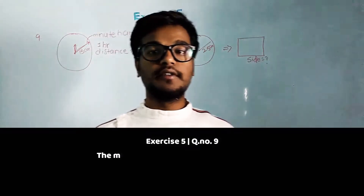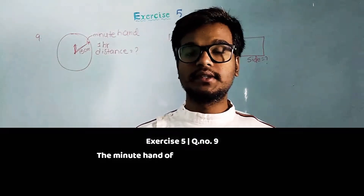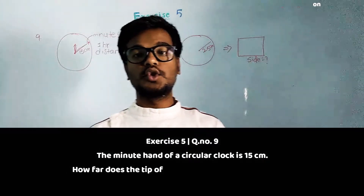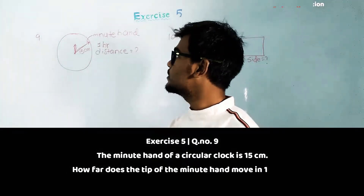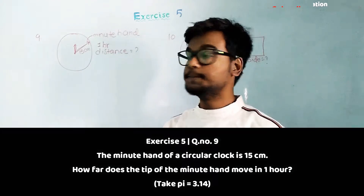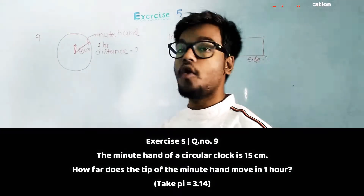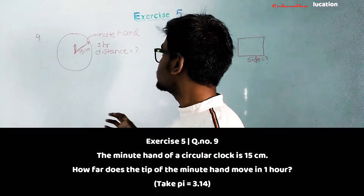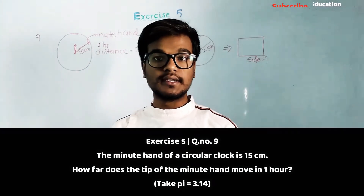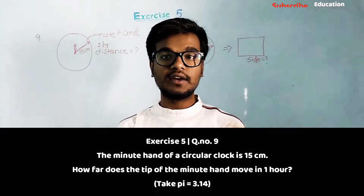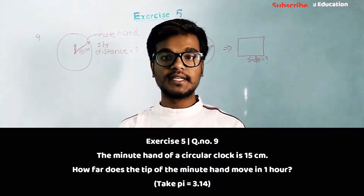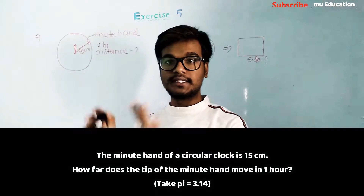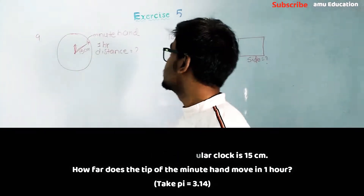Hello viewers. In this module we are going to discuss the solution for the 9th and 10th questions in exercise 5. The 9th question states that in a circular clock, the length of the minute hand is 15 centimeters. The minute hand starts from the center and ends at the tip of the clock, which is the circular surrounding.